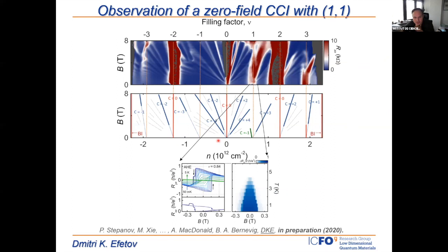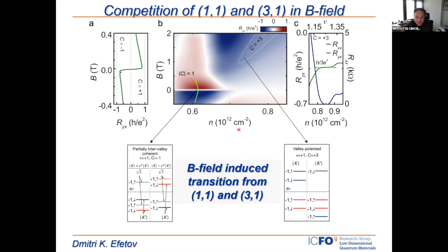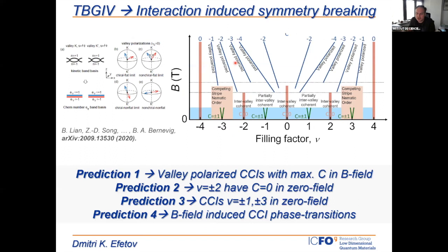We can also study the phase transitions in magnetic fields. For this particular case, we observe a magnetic state with Chern number one at zero field. Going to higher magnetic fields, this state disappears and transitions to a valley-polarized state. The theoretical picture, from our collaborator Andrej Bernevig, involves taking time reversal symmetry breaking from interactions alone to define a complex magnetic phase diagram for twisted bilayer graphene.